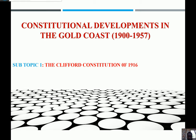By way of reminding ourselves about the 1903 constitution's composition, in the executive council we had four members comprised of the colonial secretary, the financial secretary, the head of the army, and the attorney general. The head of the army was later replaced with the director of public works, because they didn't see the reason why the army should be part of the colonial administration. We also looked at the functions of the executive and legislative councils. If you want to know all this, please watch our previous video on the 1903 constitution.